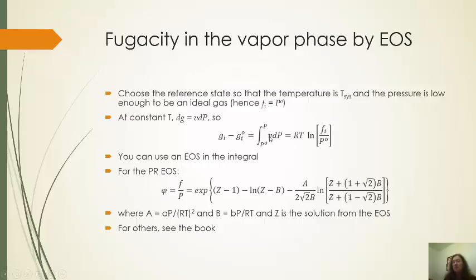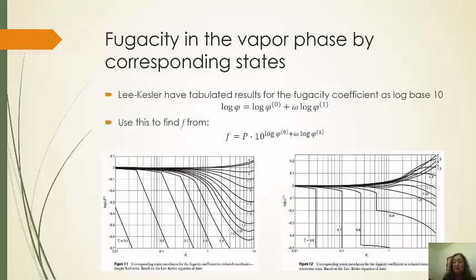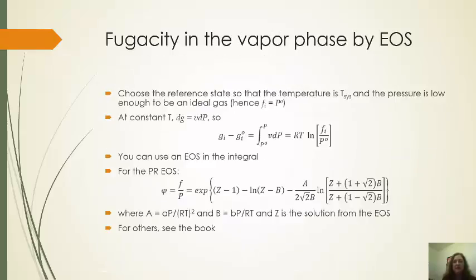Now, if I have an equation of state, no problem. I can do that. In our book, we have several different forms of the integrals, and I skipped ahead a couple of slides. But if you do that, then they have things like, for the cubic equations of state, they have all those forms with A's and B's. Remember those? Well, they have that sort of thing for fugacities also. And so if you're using the Peng-Robinson equation of state, this is the form that comes out of doing this integral.